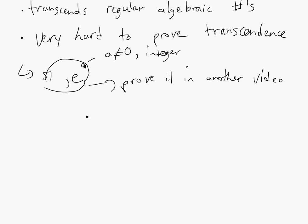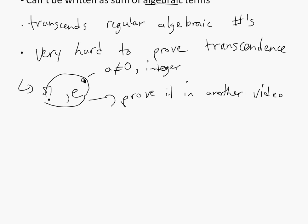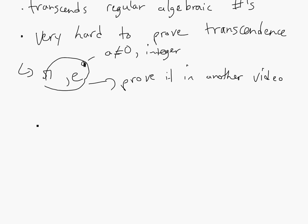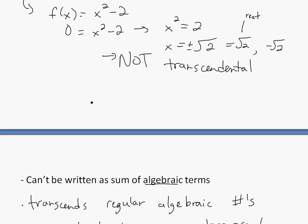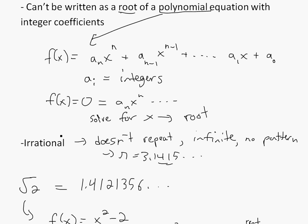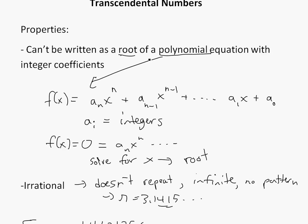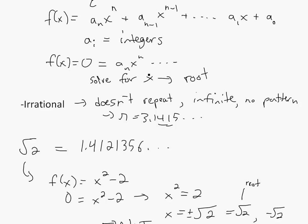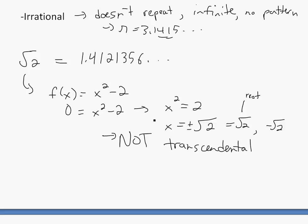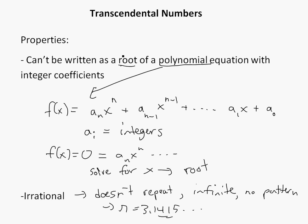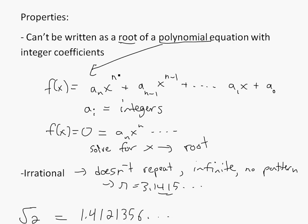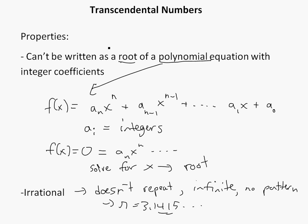It's very hard to prove that a number is transcendental, and there are actually many numbers yet to be proven. But basically, transcendental numbers are irrational — though not every irrational number is transcendental — and they can't be written as a root of a polynomial equation or as a sum of algebraic terms. E and pi are transcendental, and I'll show why in another proof later. Thanks for tuning in and stay tuned for another Math Easy Solution.